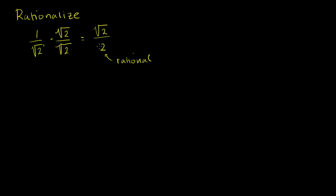And you could say, now I have square root of 2 halves — it's easier to say, even. So maybe that's another justification for rationalizing this denominator. Let's do a couple more examples.